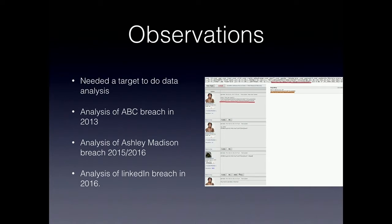My interest started when I began diving into the data that was out there. Probably the first instance was a breach against the ABC in Australia back in 2013. Going through it, I could not only identify passwords associated with well-known individuals, but I also found that two or three admin hashes in the system were being sought for cracking on a Russian forum — evidence the site had actually been breached long before Anonymous made claims to the hack.